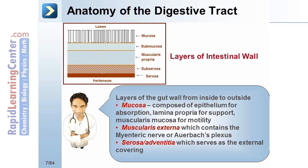The mucosa is composed of epithelium for absorption, the lamina propria for support, and the muscularis mucosa for motility. The muscularis externa contains the myenteric nerve, also known as the Auerbach's plexus. And the serosa, or adventitia, serves as the external covering.